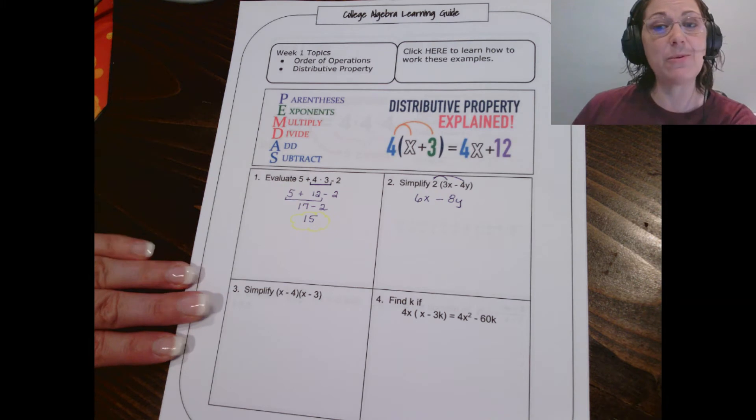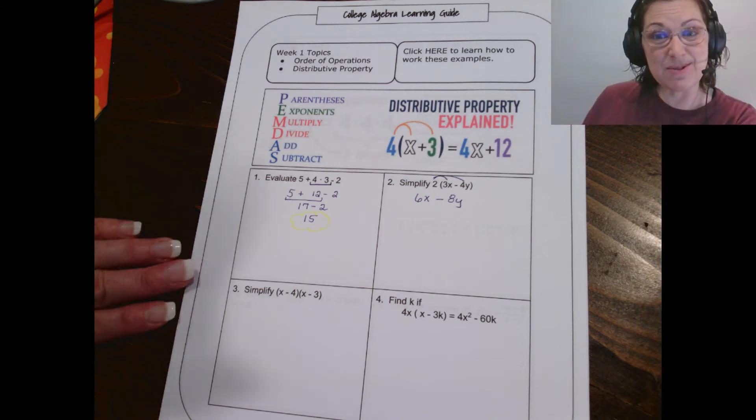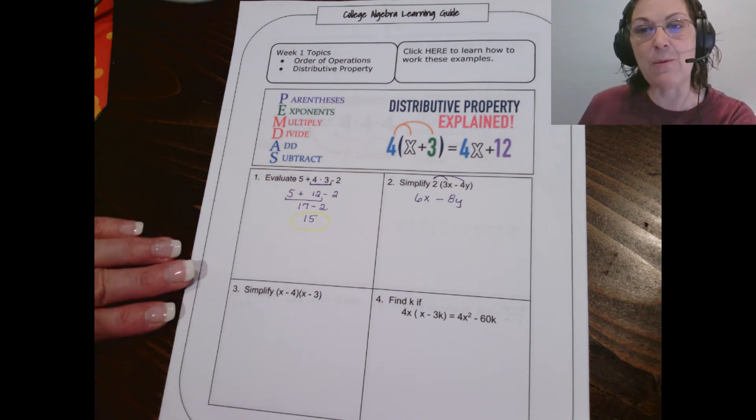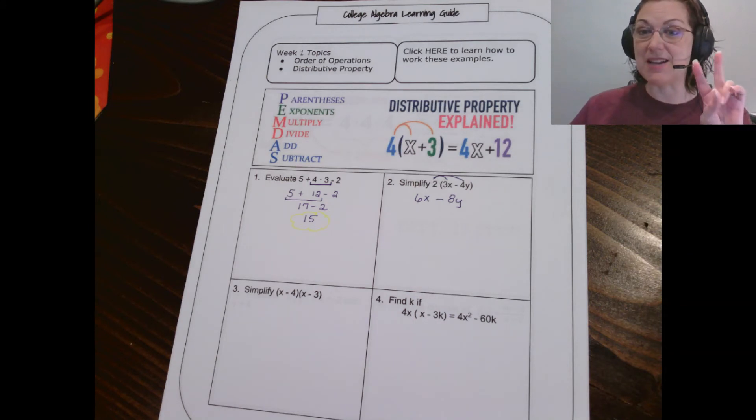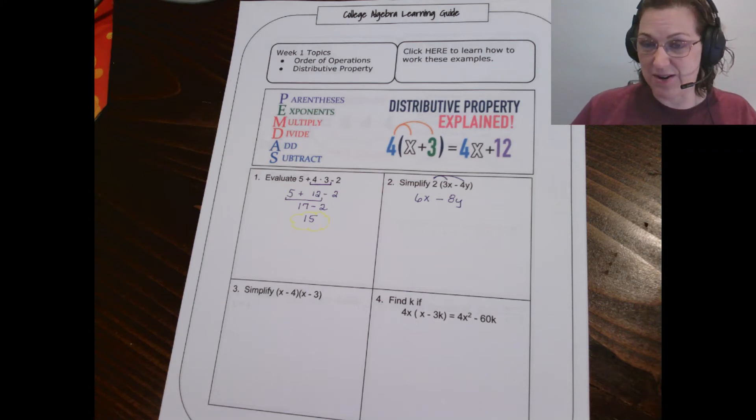You may ask yourself, well, can't we go ahead and subtract the 6x minus 8y? And the answer is no, because they are not like terms. Just to summarize briefly, like terms have the same variables and the same exponents. 6x and 8y don't have those same variables and same exponents, so we can't combine them.